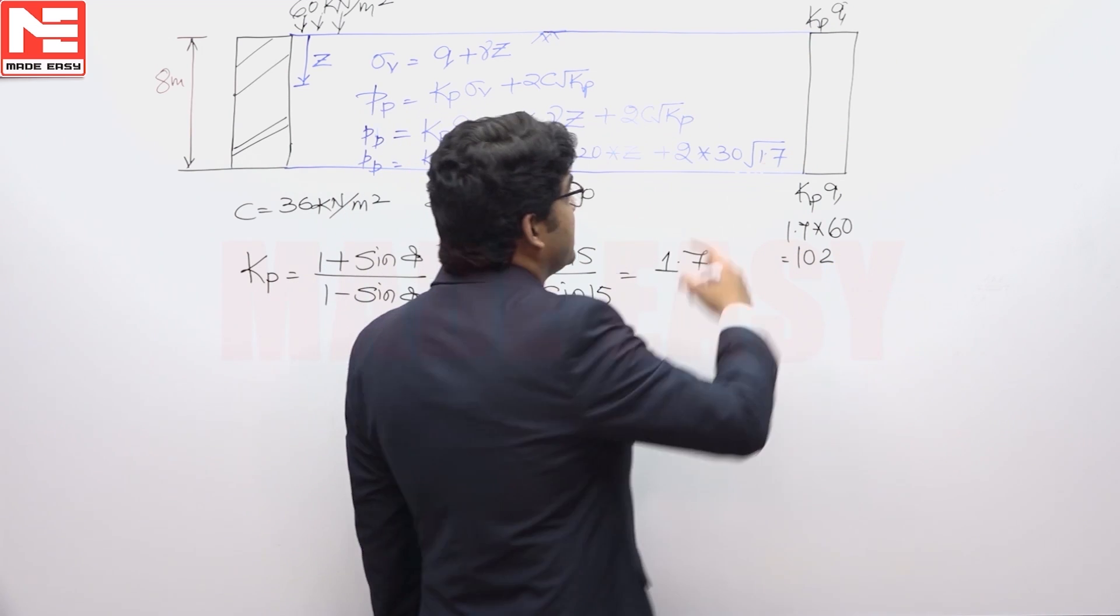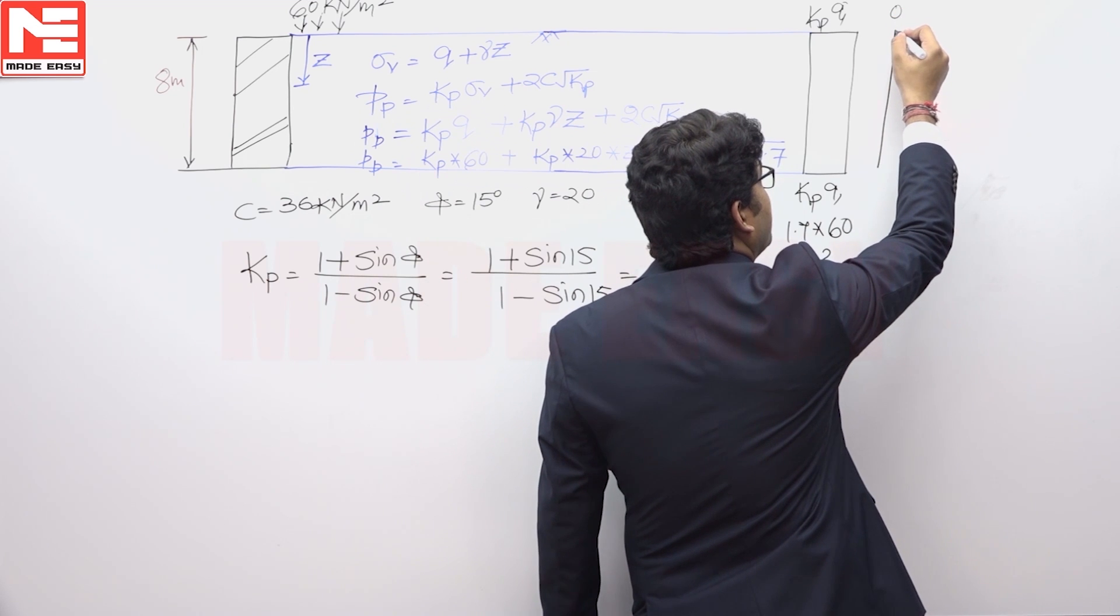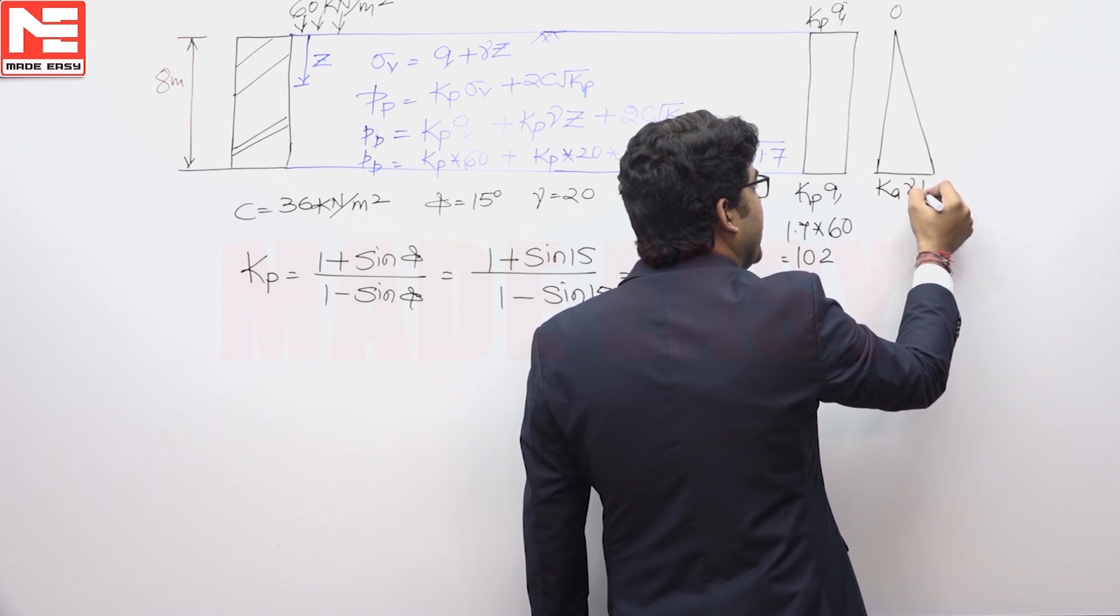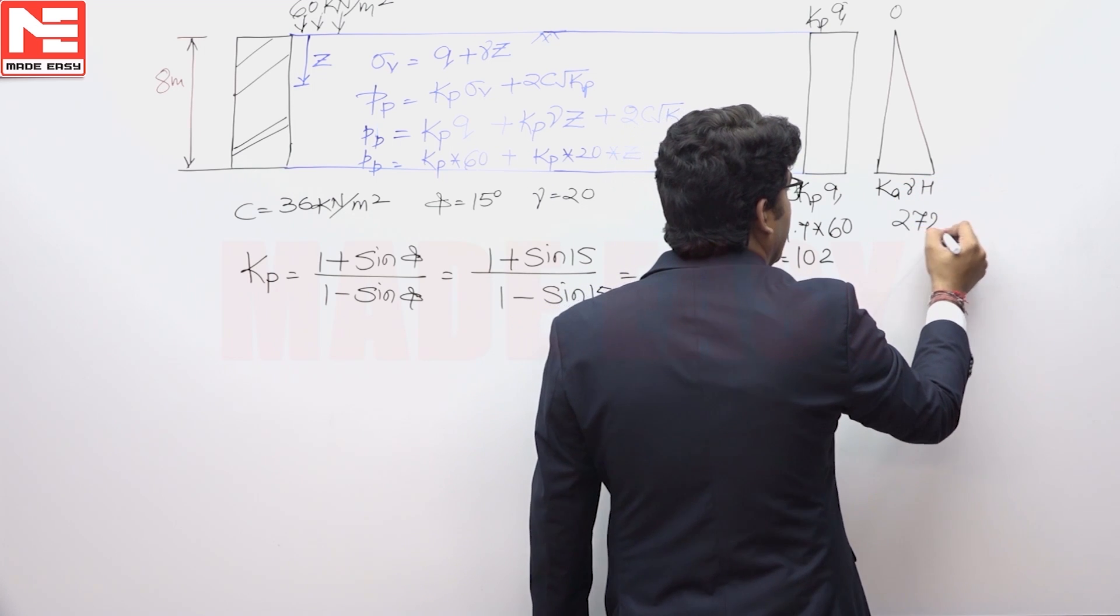Next one is this triangle, K into gamma into Z, so that top Z is equal to 0, this value will be 0 and at the base this is equivalent to K into gamma into H and this is equivalent to 270.